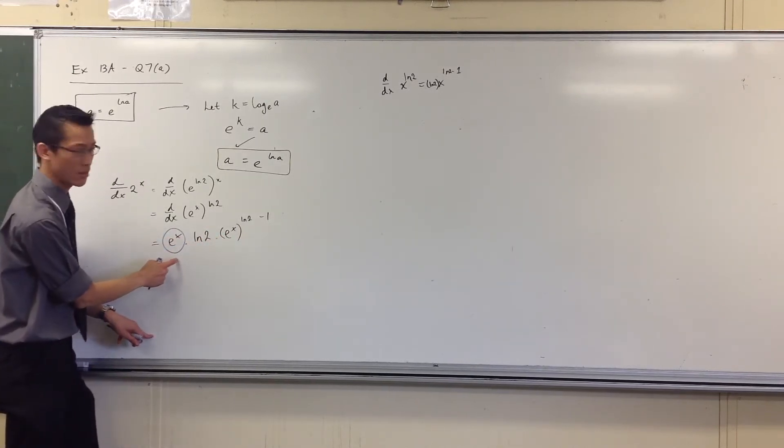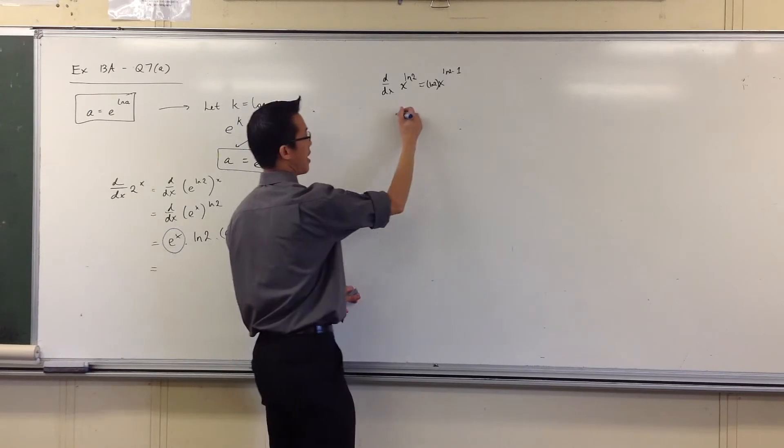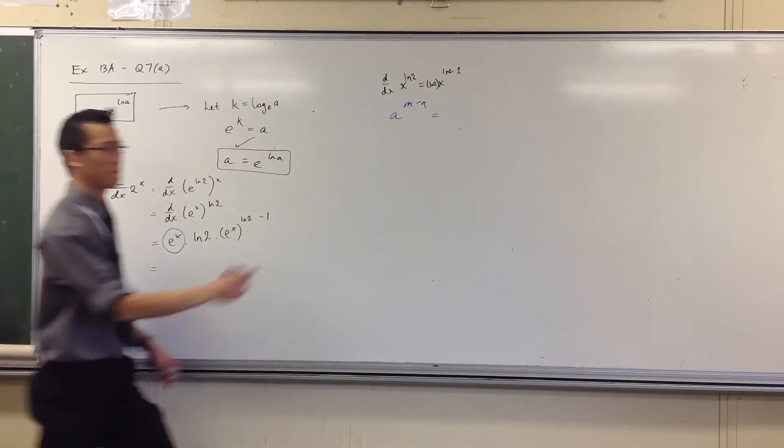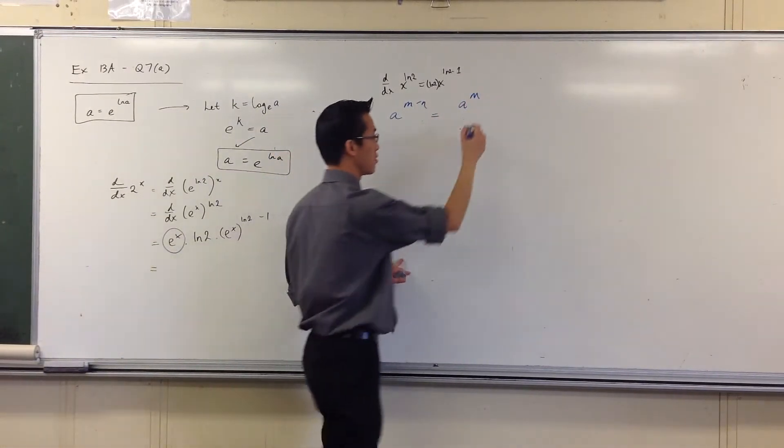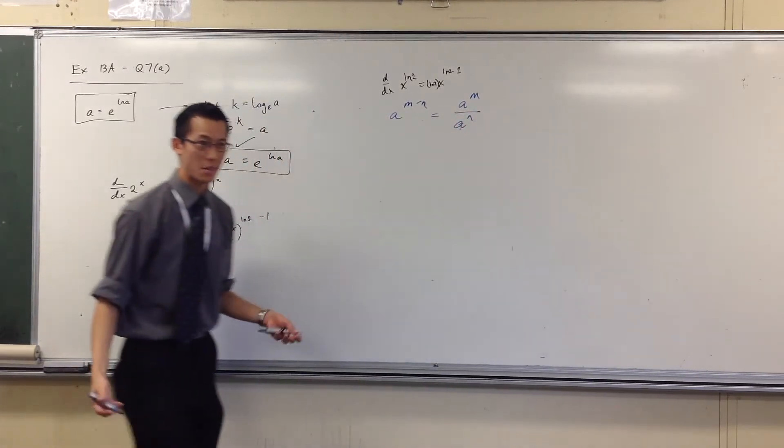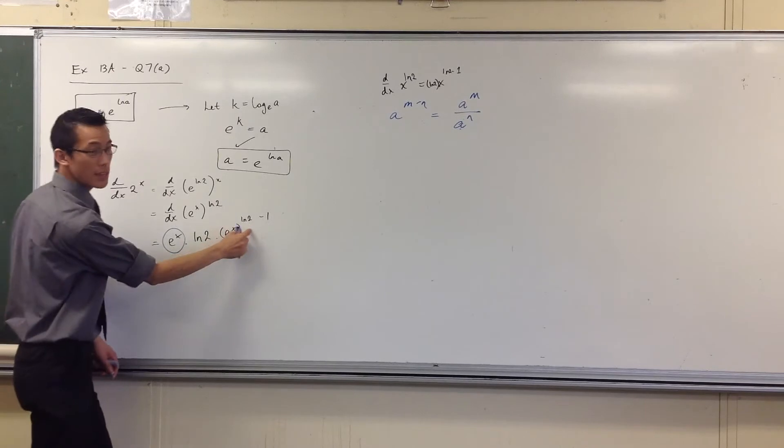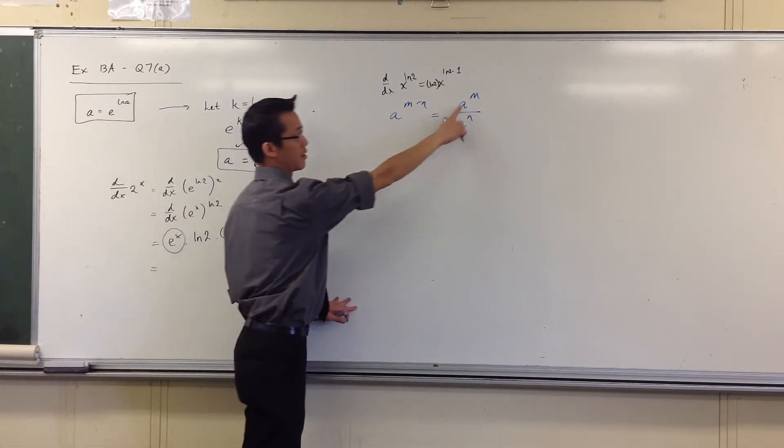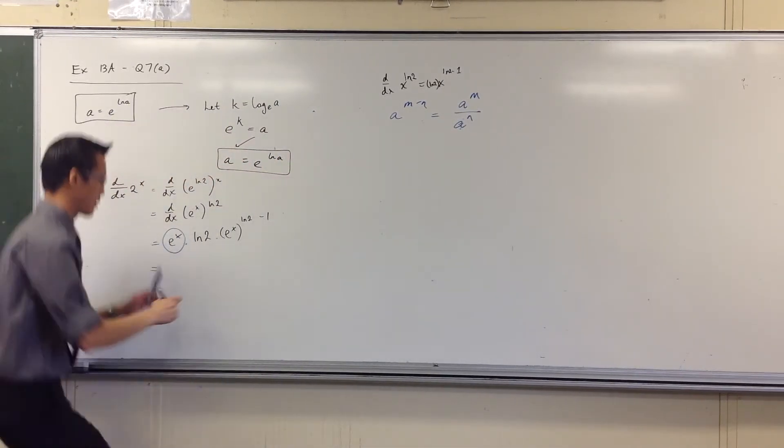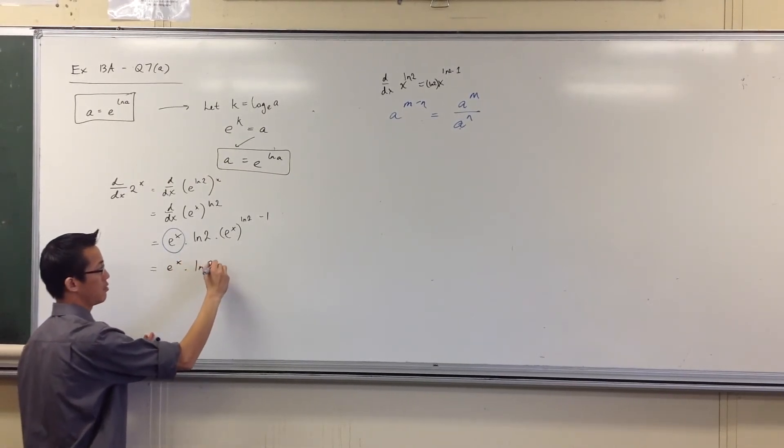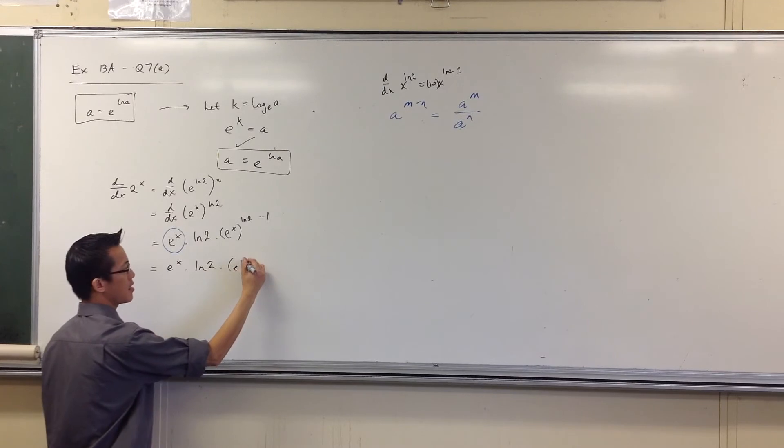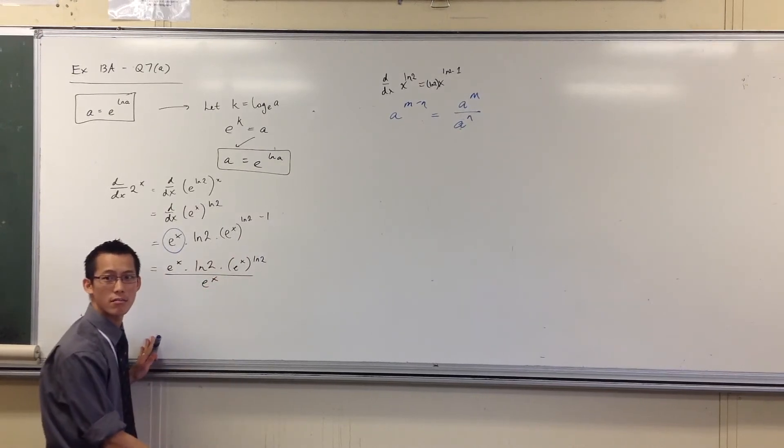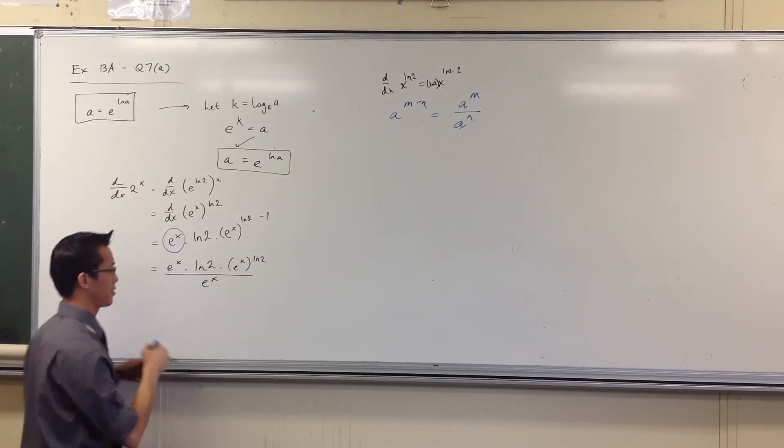When you've got, say, a to the power of m minus n, what's that equal to, index laws? We're dividing, aren't we? Because a to the minus n, that's division. So I have the same thing here. See, I've got e to the x, there's a constant, and that minus 1 means I'm going to be dividing. So let's keep rewriting this. I've got e to the x, I've got a log 2. Now what do I have here? e to the x times log 2, but then this minus 1 is going to be division. Do you see that? Okay, so that's good. That's nice. This guy, this guy, gone.